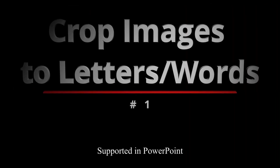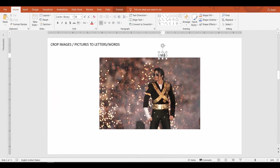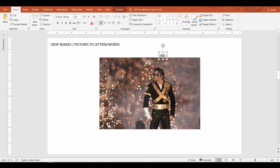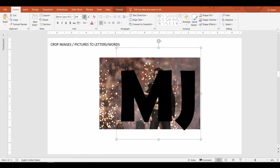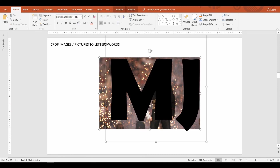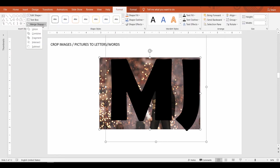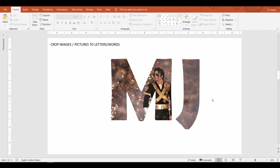Crop images to letters or words. This is the most commercially used and popular cropping technique. To do this, first type the letter or the words that you need. Once done, select the image first, then the typed text. Go up to the Format tab, select merge shapes and then select intersect. Look at the magic — PowerPoint has turned the image into the shape of the text and has also cropped the rest of the image. Isn't this wonderful?